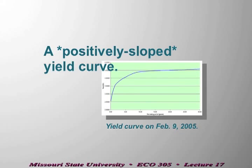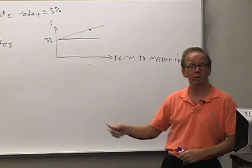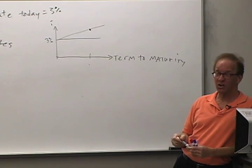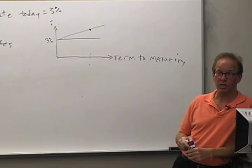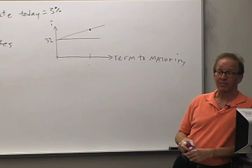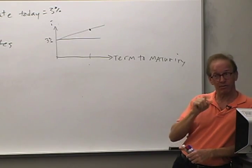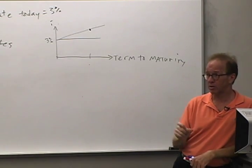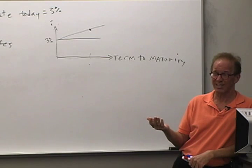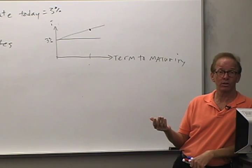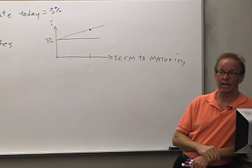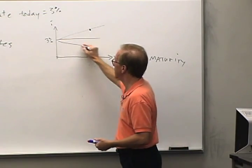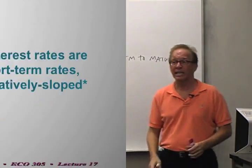Conversely, if I think short-term interest rates will be lower in the future than today's 3%, I'd want to lock in the current rate by making long-term loans. That floods the long-term credit market with supply, driving long-term interest rates down. With those expectations, we get a negatively sloped yield curve. This is an independent effect from expectations alone.